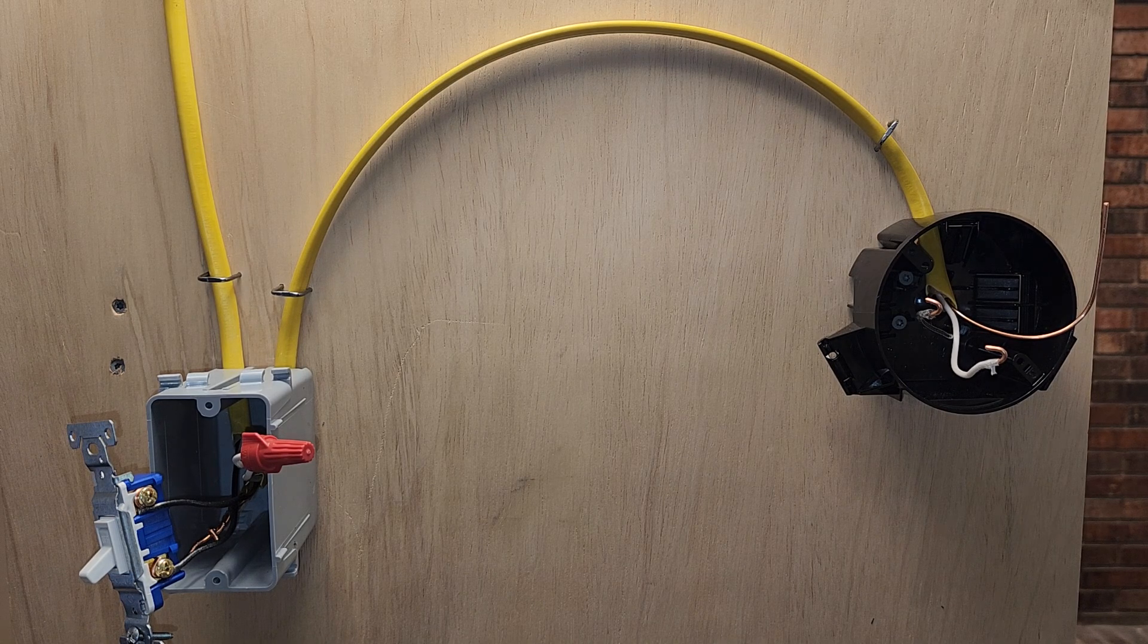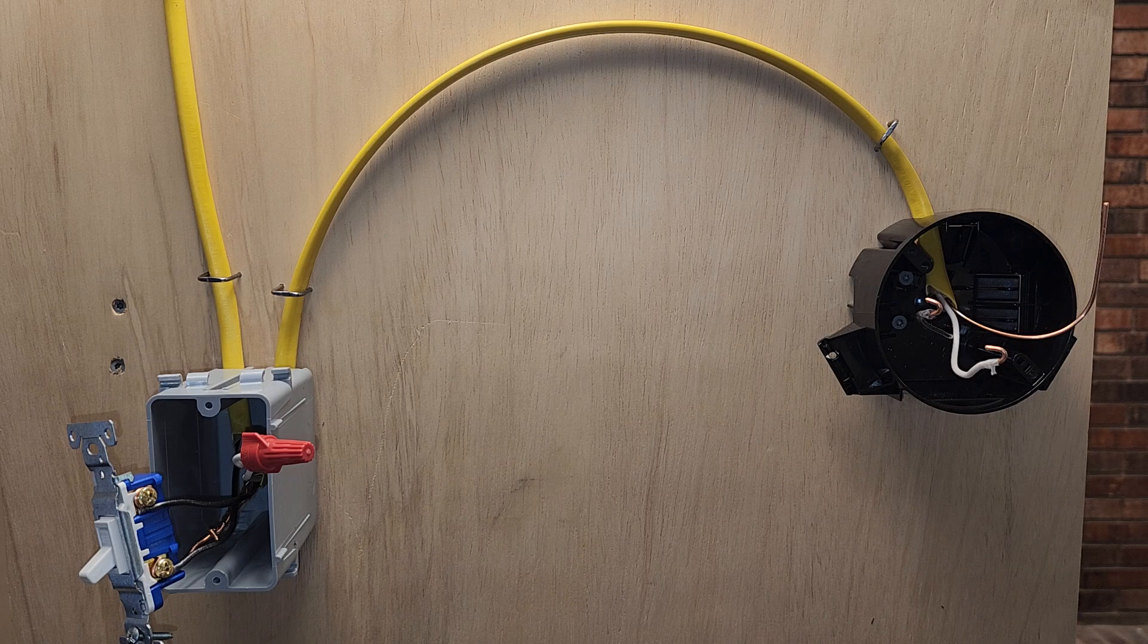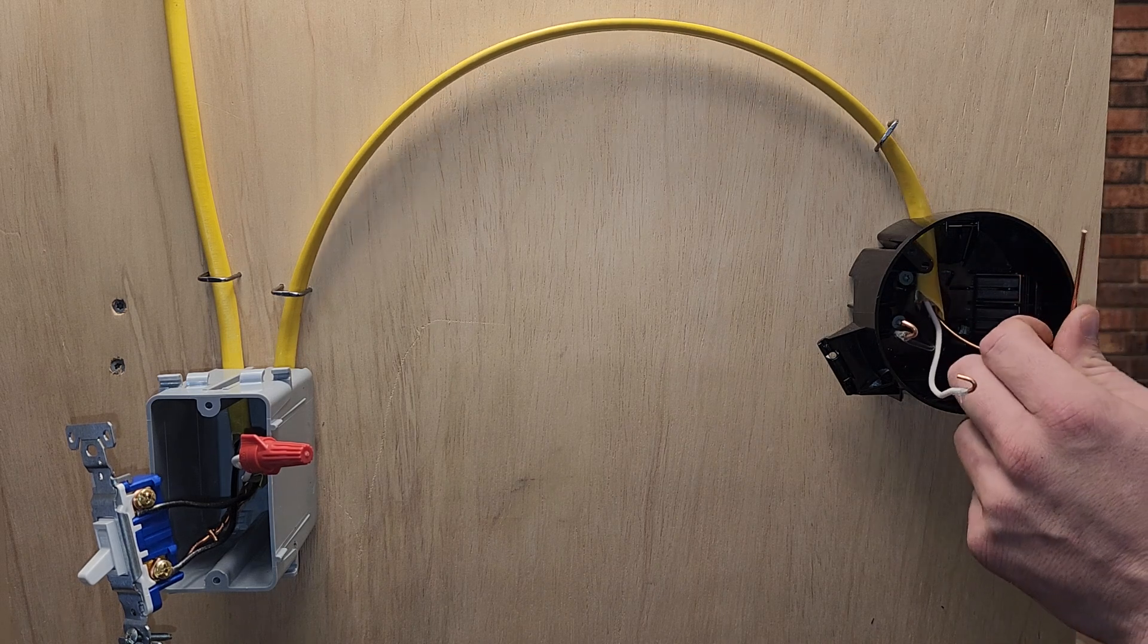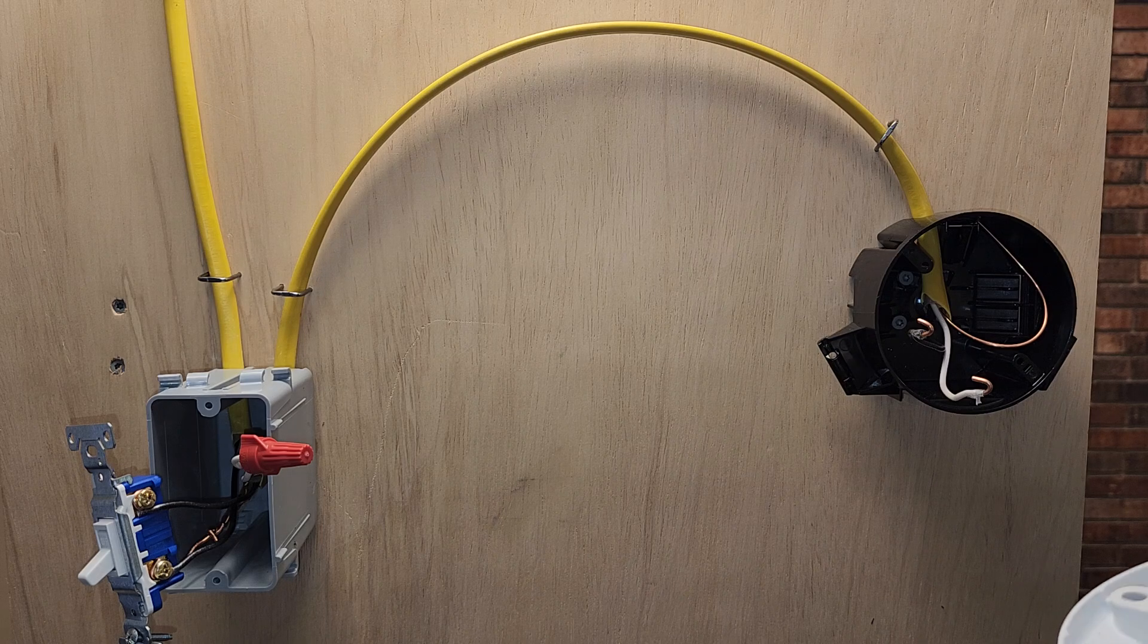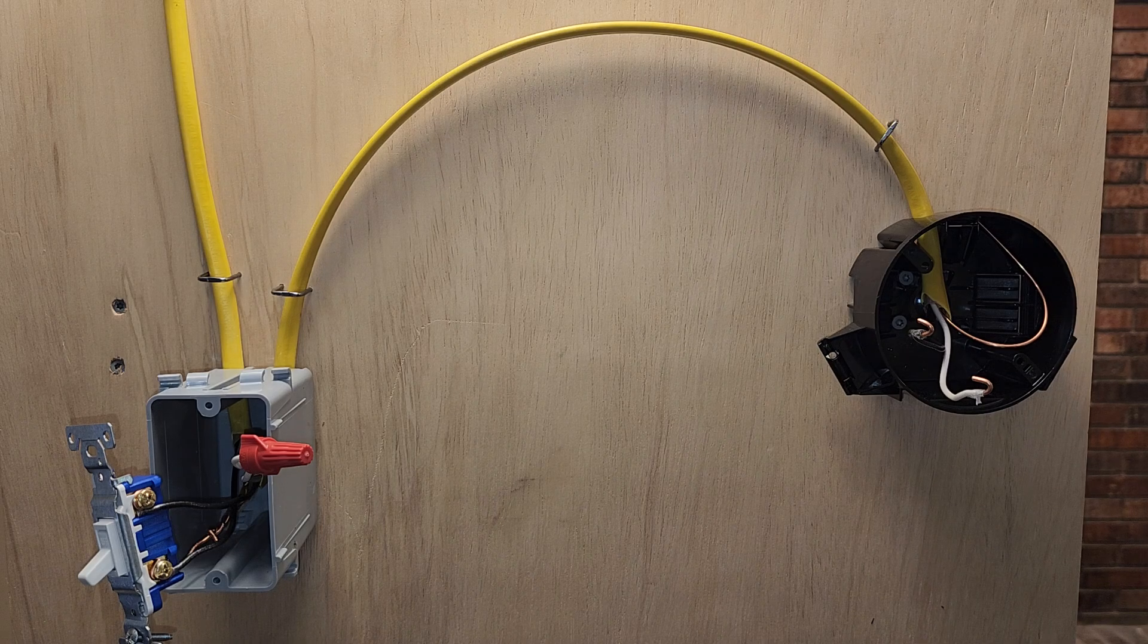we actually have a plastic housing and light, so we don't need the ground. I wouldn't cut this ground off. You may end up replacing it and getting a metal box, which it would need to be grounded then.